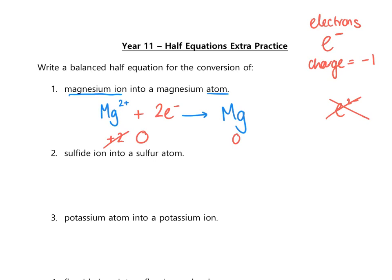Next, a sulfide ion converting into a sulfur atom. The sulfide ion is S with its charge from its group. Sulfur is in group 6, so it forms an ion with a charge of 2−. The sulfur atom is just S with no charge and it's not diatomic. The charge on the left hand side is minus 2; on the right it's zero. This time the right hand side needs to come down in charge, so we add two electrons to the right hand side, bringing it to minus 2, which matches the left.